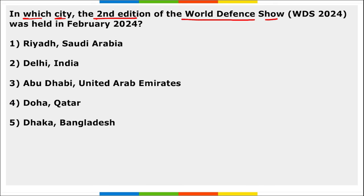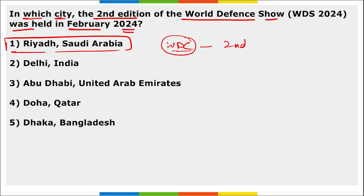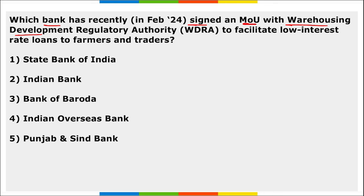In which city was the second edition of the World Defense Show held in February 2024? It was held in Riyadh, Saudi Arabia. This was the second edition of the World Defense Show, held from 4th to 8th of February in Riyadh, Saudi Arabia.